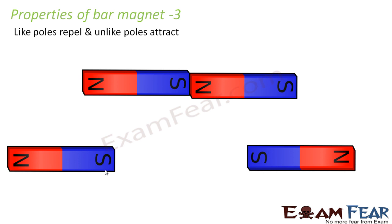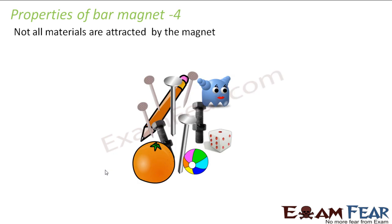The fourth property is that not all materials are attracted by a magnet. Many people might think that a magnet should attract everything within its magnetic field — tables, chairs, wooden furniture, even human beings — but that is not the case. A magnet can attract only a specific set of materials, which are known as magnetic materials. We will discuss those materials in more detail later.